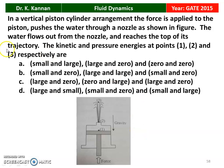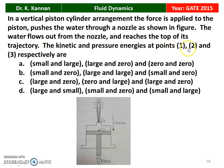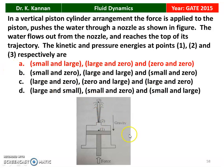The next question from the 2015 question paper: in a vertical piston-cylinder arrangement, a force is applied to the piston, pushing water through a nozzle. Point 1 is the piston, point 2 is the nozzle, and point 3 is where the water jet reaches the top of its trajectory. The kinetic and pressure energies at points 1, 2, and 3 are respectively: at point 1, kinetic energy is small and pressure energy is high; at point 2, kinetic energy is large and pressure energy is zero; at point 3, kinetic energy is zero and pressure energy is also zero. Option A is the correct answer.